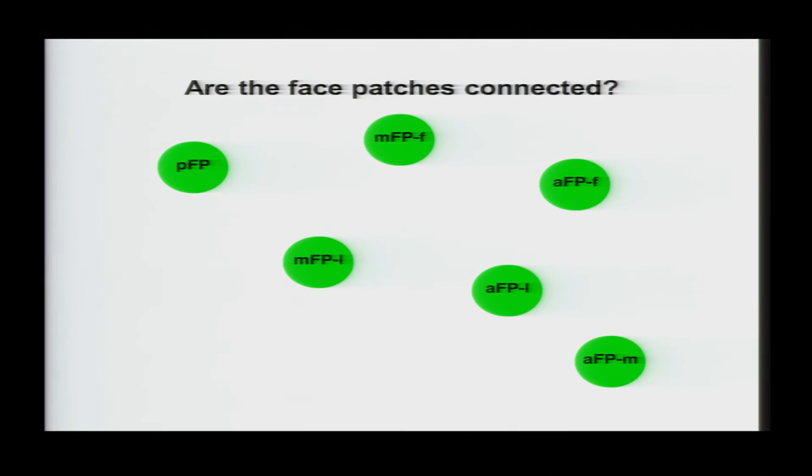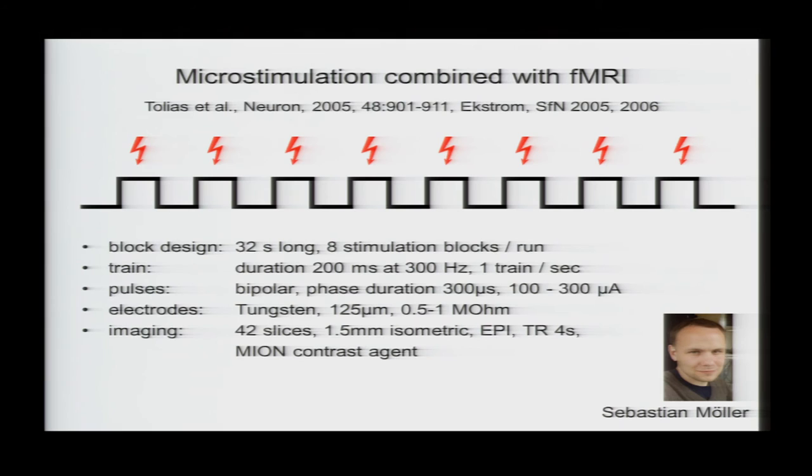So are each of these patches just processing faces independently, or do they actually form a connected system? So to address this question, Sebastian Muller in my lab did an experiment where he micro-stimulated specific face patches inside the fMRI scanner while the monkey was just looking at a blank screen, and then looked across the entire brain for other regions that were activated.